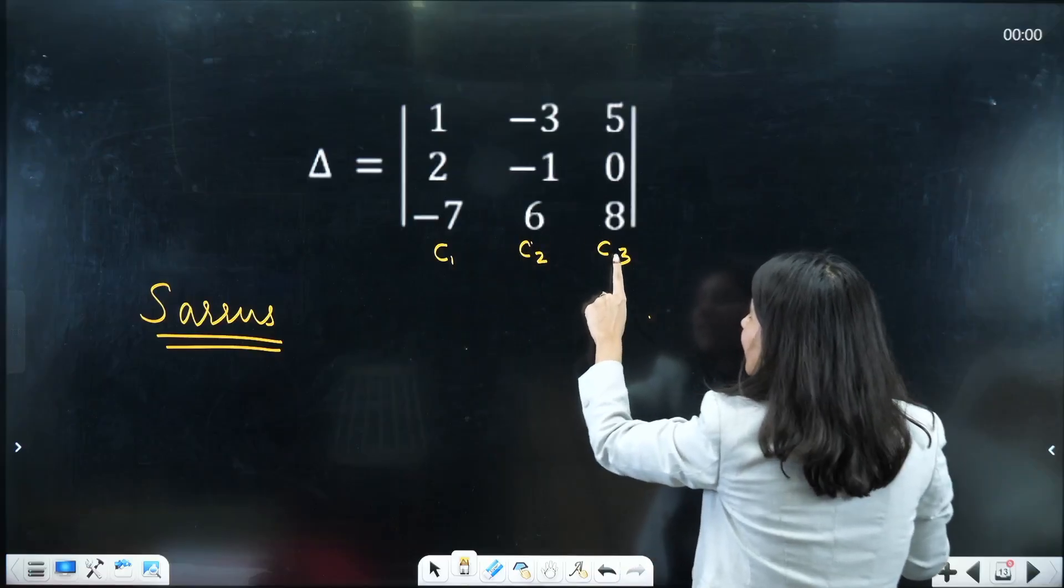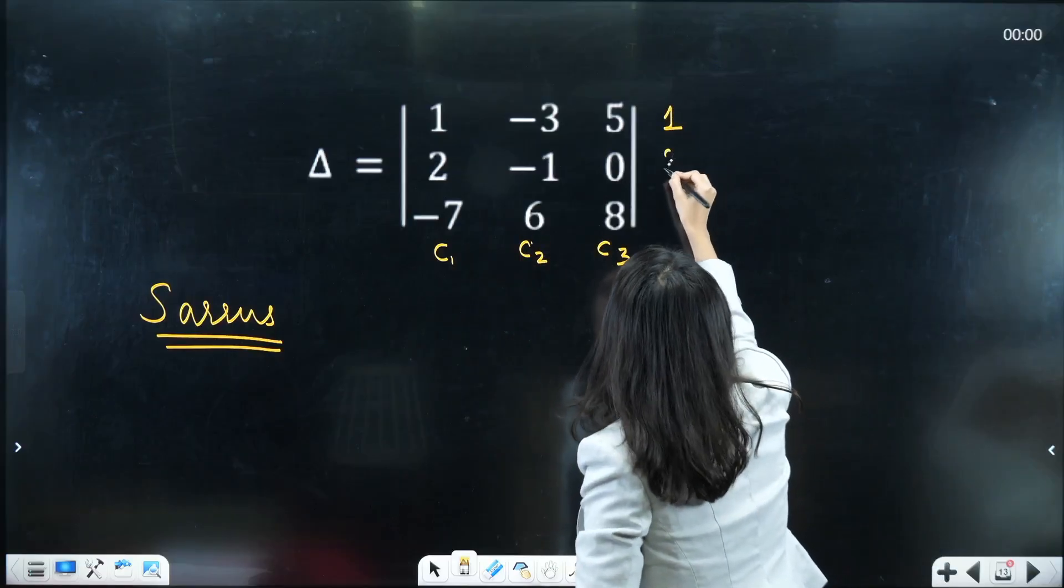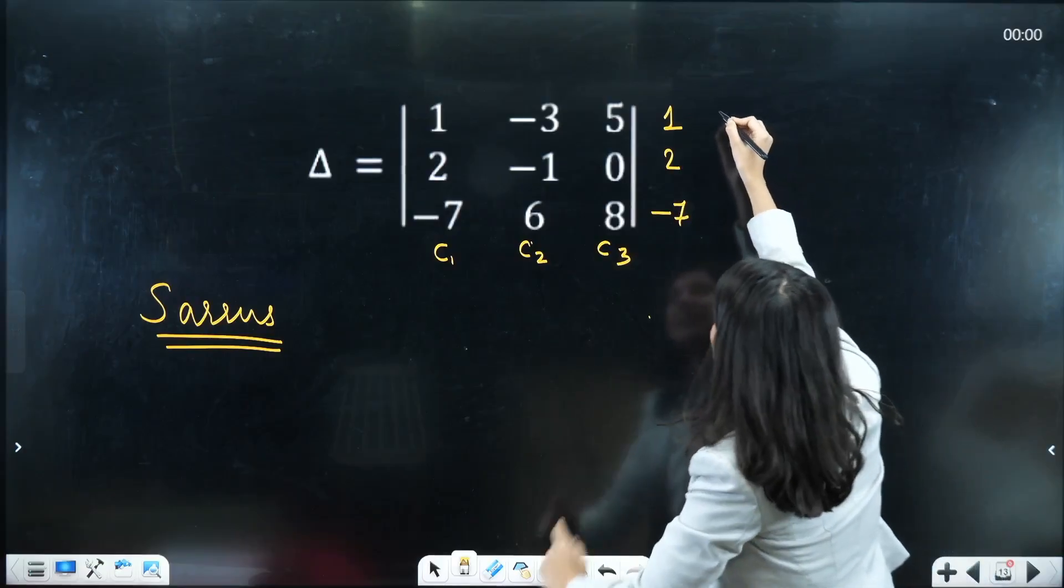So C1, C2, C3 and again you have to write C1. And after that you have to write C2.